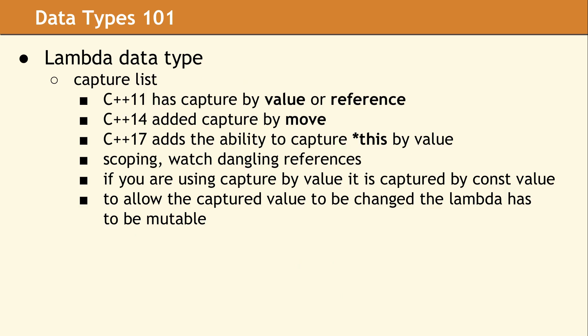The capture list has undergone some changes in the different versions of C++ since 11. C++ 11 allows capturing by value or by reference. C++ 14 added a great deal of functionality, which included the ability to capture by move, which is very useful. C++ 17 also adds the ability to capture the object that you are declaring the Lambda in by value.